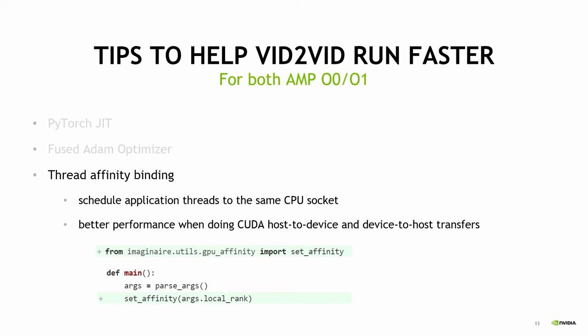The next trick is Thread Affinity Binding. It's helpful when you do a lot of host-to-device transfers, like transferring tensors between CPU and GPU. It helps achieve better performance because it can schedule application threads to the same CPU socket. The change is very straightforward — just import the file and set the affinity.